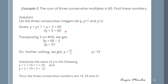Taking 3 to the right hand side gives 3y equal to 60 minus 3, so 3y equal to 57. Dividing both sides by 3 gives y equal to 19. Substituting: y plus 1 is 19 plus 1 equal to 20, and y plus 2 is 19 plus 2 equal to 21. So the three consecutive numbers are 19, 20, and 21.